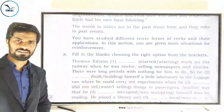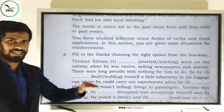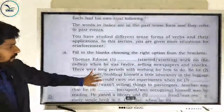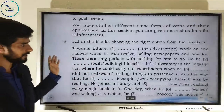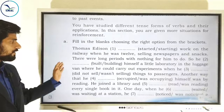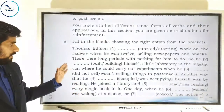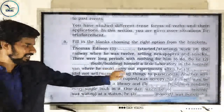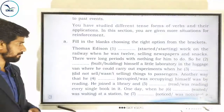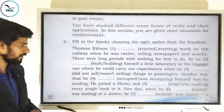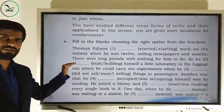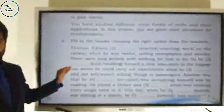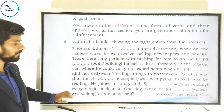For example: 'Thomas Edison ___ work on the railway station when he was 12.' The options are 'starting' or 'started.' Since he was 12 is a past event and Edison is no more, it must be past tense — so 'Thomas Edison started work on the railway station.' Next: 'There were long periods with nothing for him to do, so he ___ himself a little laboratory in the luggage van where he could carry out experiments.' The answer is 'built.' Read each sentence, find which form is suitable, and fill in the blanks. Do this in your textbook and show me.